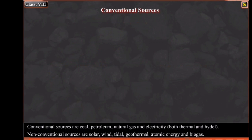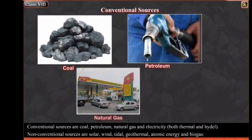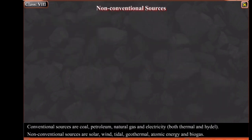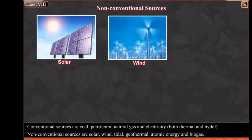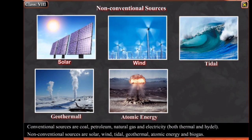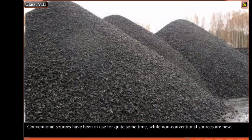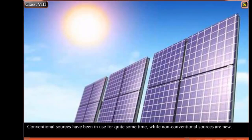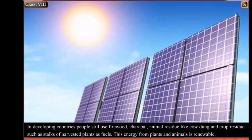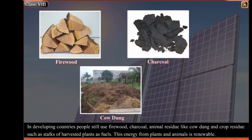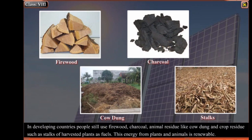Sources of energy are categorized as conventional and non-conventional sources. Conventional sources are coal, petroleum, natural gas and electricity — both thermal and hydel. Non-conventional sources are solar, wind, tidal, geothermal, atomic energy and biogas. Conventional sources have been in use for quite some time, while non-conventional sources are new. In developing countries, people still use firewood, charcoal, animal residue like cow dung and crop residue such as stocks of harvested plants as fuels. This energy from plants and animals is renewable.